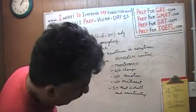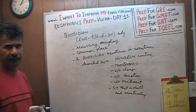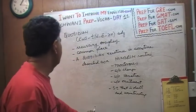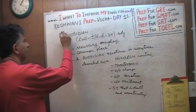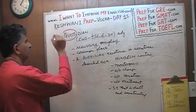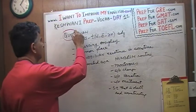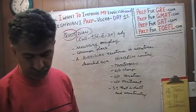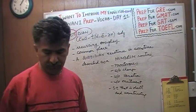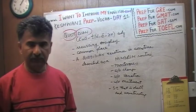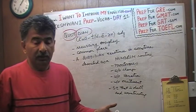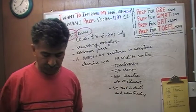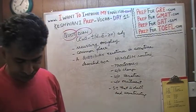The word 'quotidian' has nothing to do with the word 'quotient' — they are not related at all. Quotidian has two parts: the prefix 'quot,' meaning 'as many as,' and the suffix '-dian,' which comes from the Latin word 'dies,' meaning 'day.' So literally it means 'as many days,' or in other words, something that happens daily — day after day.